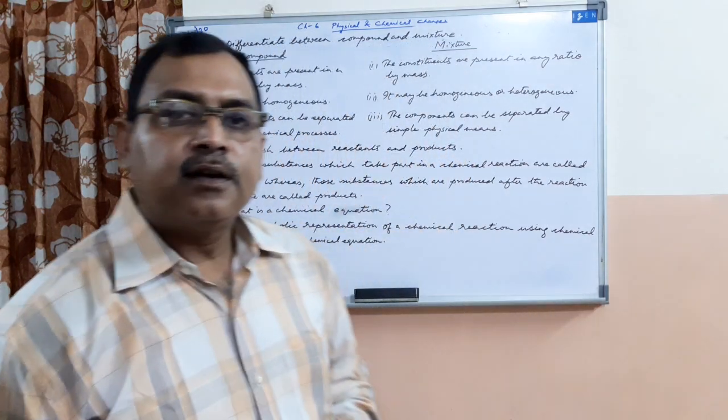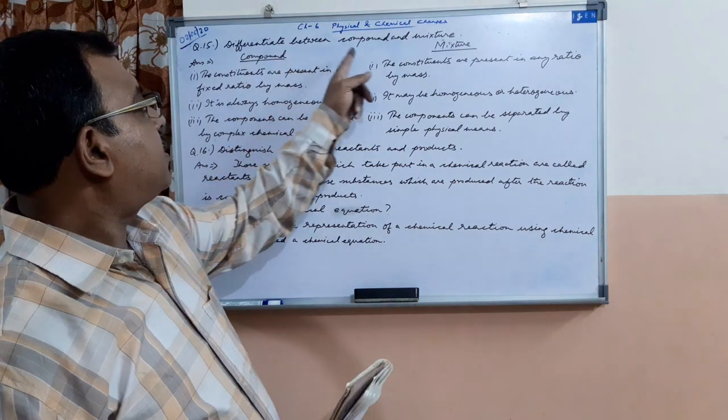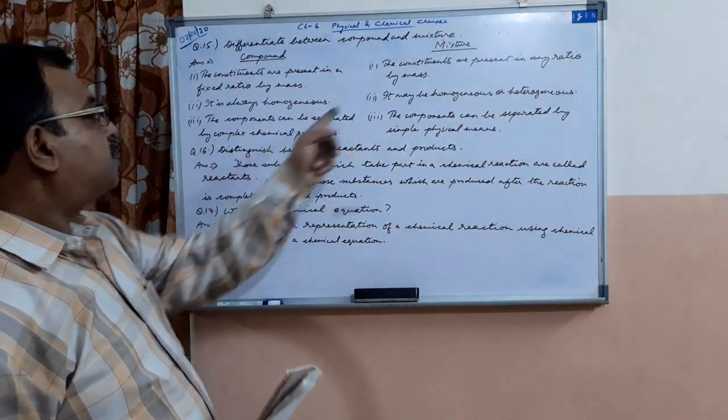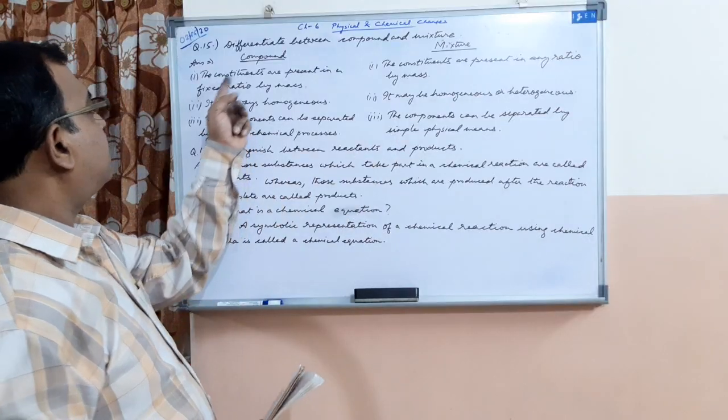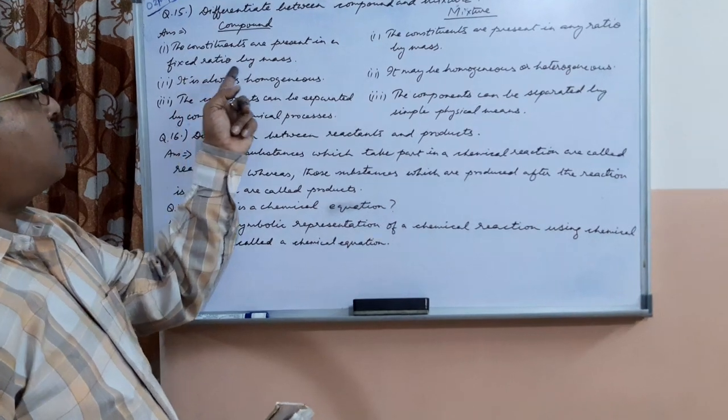So welcome back children, here is the 15th question: differentiate between compound and mixture. Below compound there are three points, below mixture there are three points. First point below compound: the constituents are present in a fixed ratio by mass.